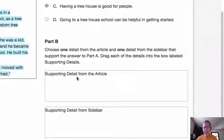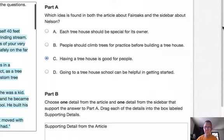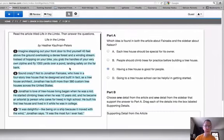You've got a box that says supporting detail from article, another box that says supporting detail from sidebar. When I look back at the articles, I can see that the text is highlighted in blue. When I hover over the text, part of it will turn yellow, and that yellow part is the supporting detail.